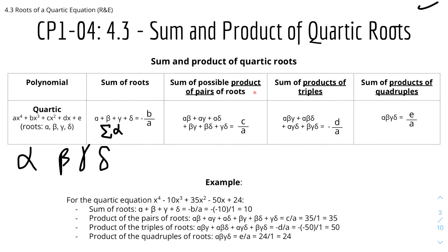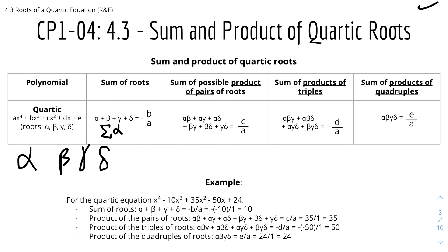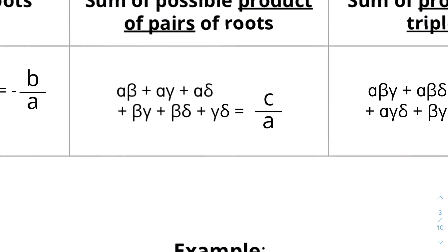Next we have the sum of the product of pairs of roots. We need all combinations of product pairs. Using permutations and combinations, there are 6 pairs: αβ, αγ, αδ, βγ, βδ, and γδ. The sum of product of pairs of roots equals C/A. This whole expression can be written in sigma notation as Σαβ.